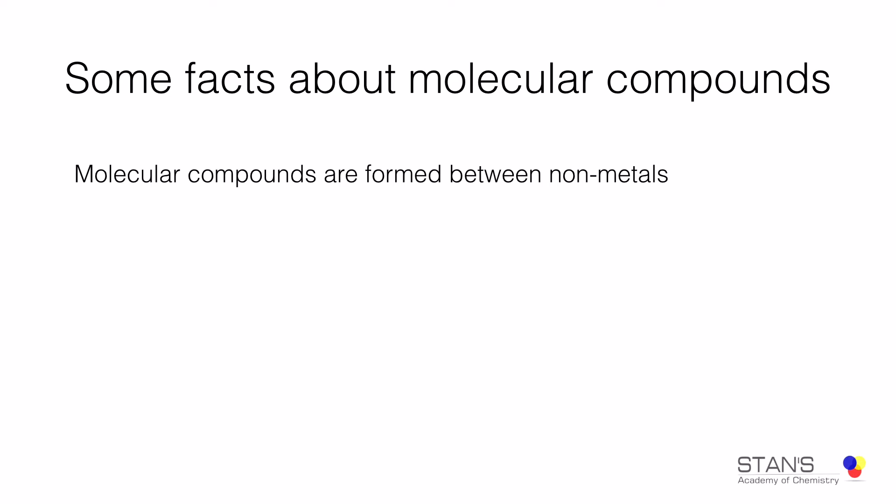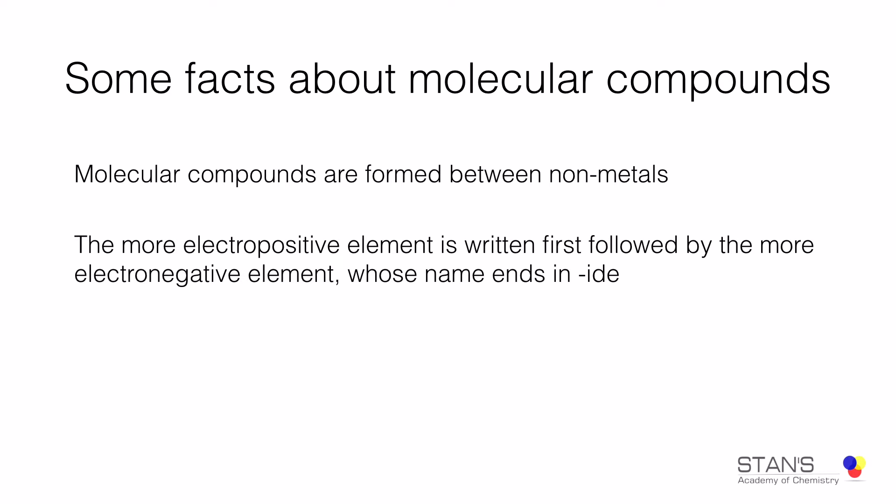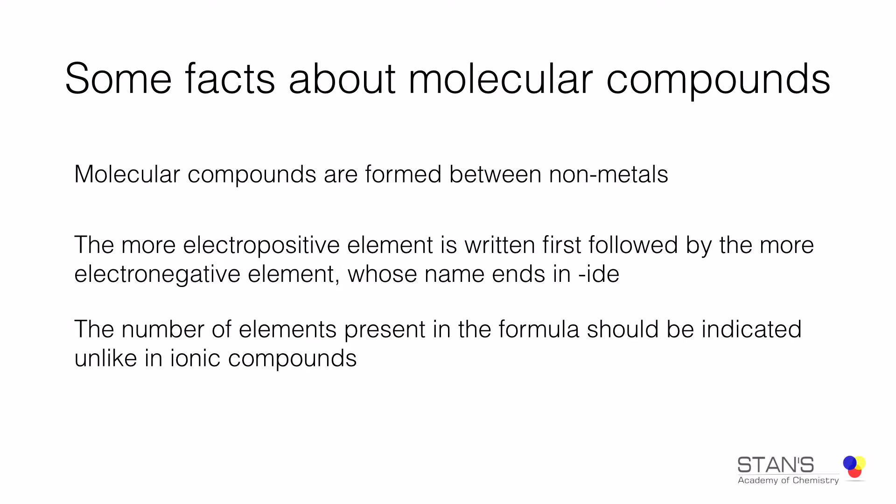Molecular compounds are formed between non-metals. The more electropositive element is written first, followed by the more electronegative element. The name of the electronegative element usually ends in -ide. The number of elements present in the formula should be indicated using Greek prefixes, and in ionic compounds we do not do that.